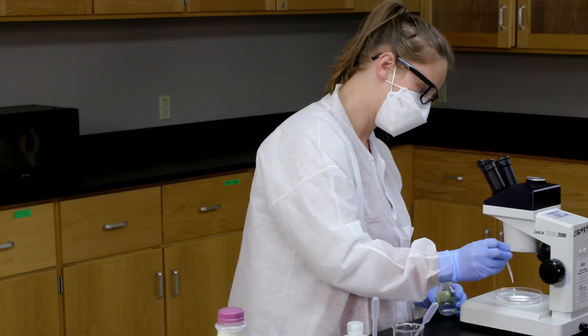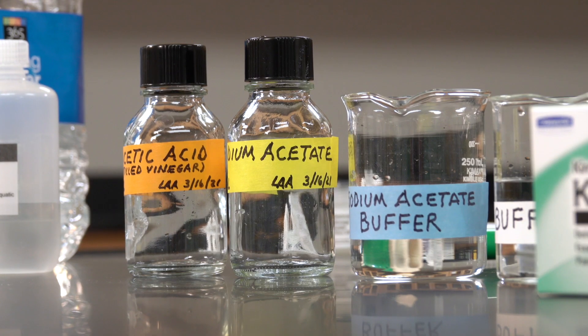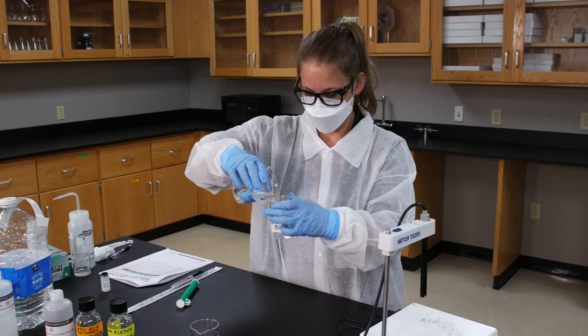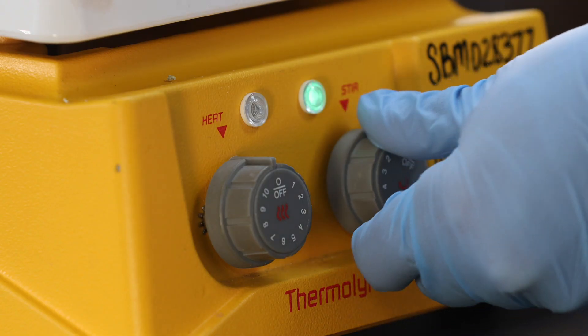Always make sure to wear your PPE, lab coat, gloves, and safety glasses. So let's make our buffer. It's equal part acetic acid and sodium acetate. Pour 100 milliliters of the buffer into a 150 ml beaker and label it. Add a stir bar and turn on the stir plate.